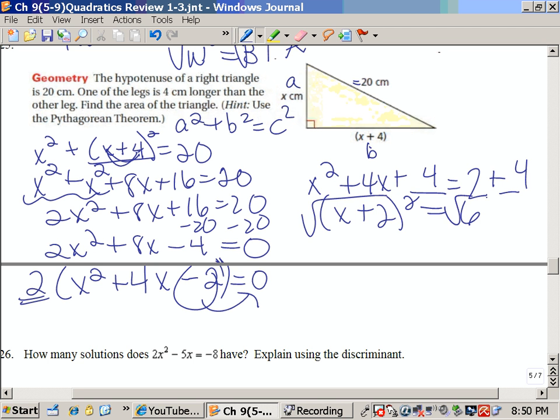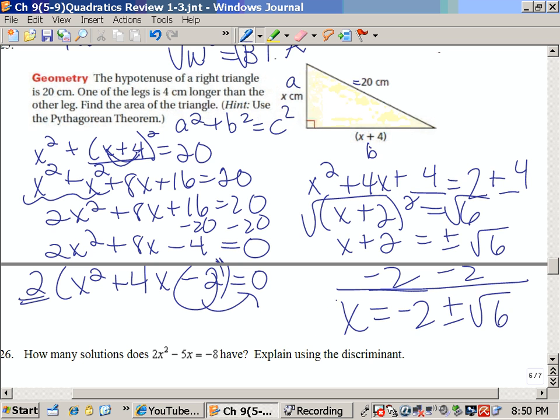Then I need to take the square root of each side, and x plus 2 is plus or minus the square root of 6. Move the 2 to the other side. Final answer is negative 2 plus or minus the square root of 6.